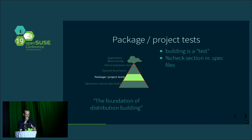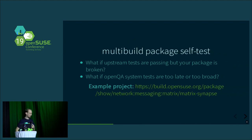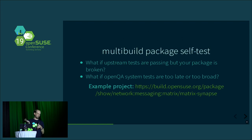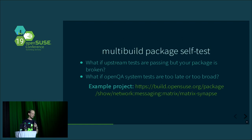I'd like to present one slightly alternative approach: what I call the multi-build package self-test. The question is: what if the upstream tests are passing but your package is broken? Or what if openQA system tests are too late or too broad, since all the other tests come later and take longer to provide information?